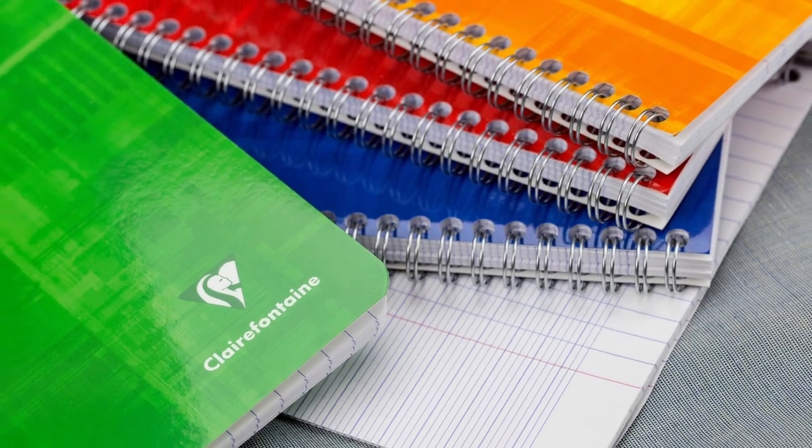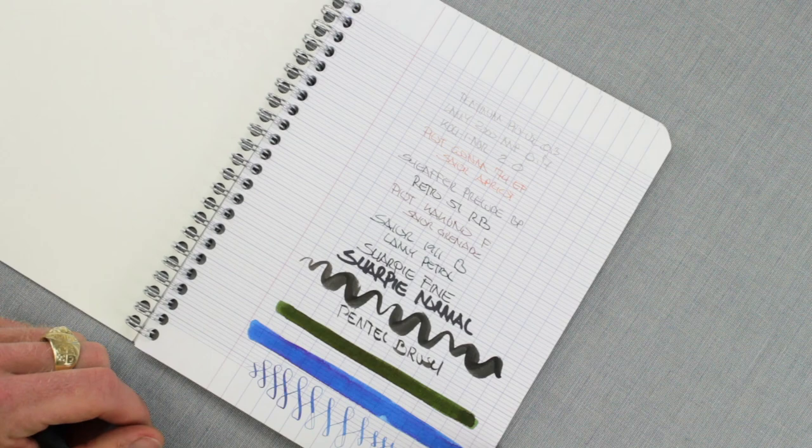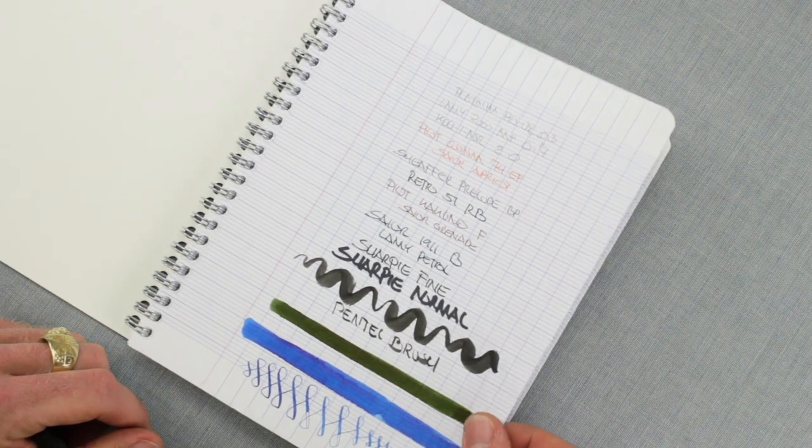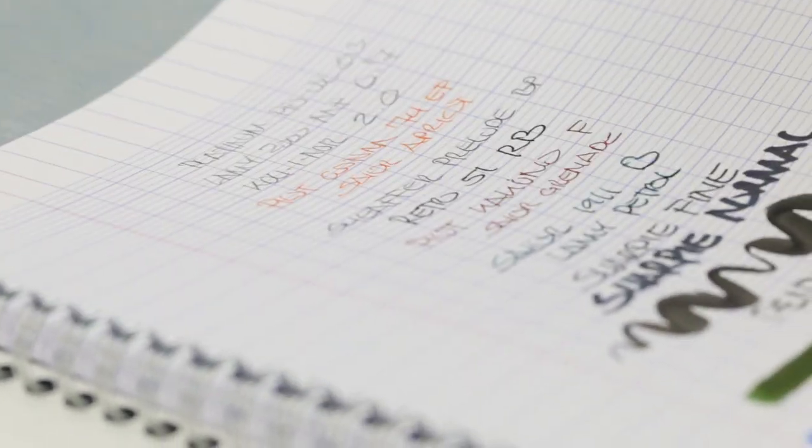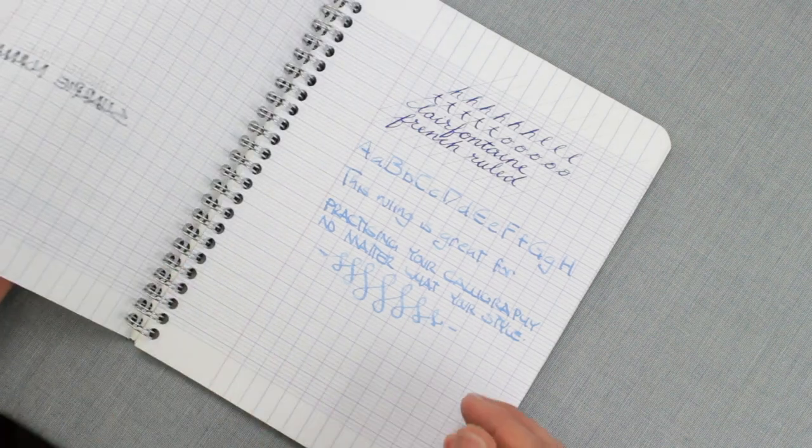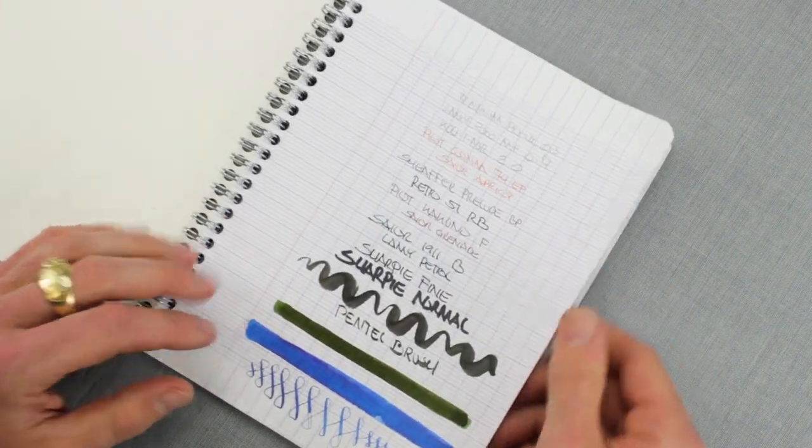Hey there, Chris here and today we're taking a look at Clairefontaine French Ruling. This particular notebook is their classic six and three-quarter by eight and three-quarter wire-bound notebook. 60 sheets, 90 gram paper, really nice stuff.